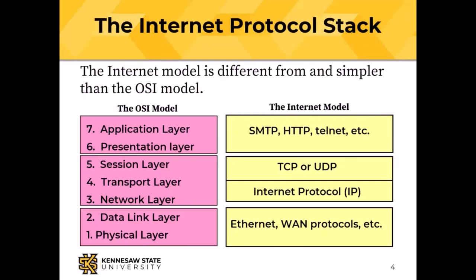The OSI model is the seven-layer model over on the left of the slide. Starting at the bottom: the physical layer, then the data link layer, network layer, transport layer, session layer, presentation layer, and application layer. The internet model protocol stack completely ignores layers one and two. It recognizes that they have to exist to get bits from one place to another, but the internet model does not define those layers — it just says we've got to have them.